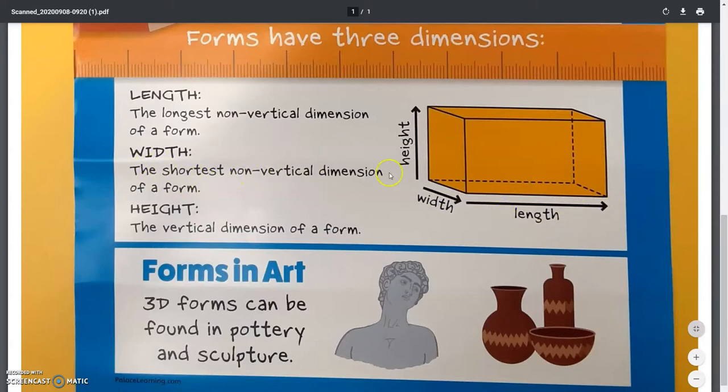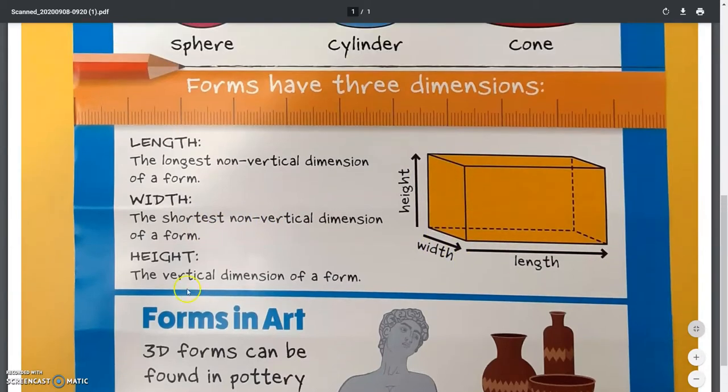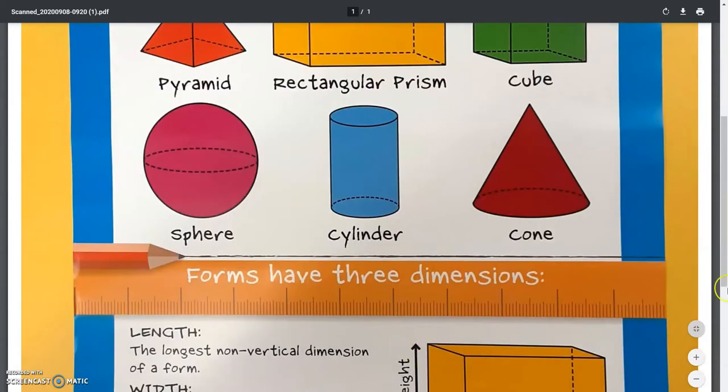Width is the shortest non-vertical part of a form. So, it's the shortest one that's not going up or down. And height is the one that's going up and down.